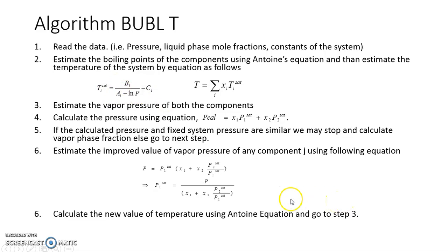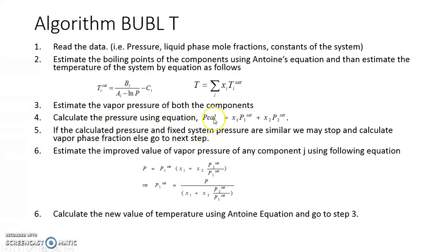This new P1_sat allows us to calculate an improved temperature using Antoine's equation by substituting P1_sat to find the system temperature. With this new temperature we recalculate both vapor pressures and a new P_calc. If P_calc matches the given pressure within the defined accuracy, we stop and calculate vapor phase mole fractions; otherwise we repeat steps 3 through 6 until convergence.